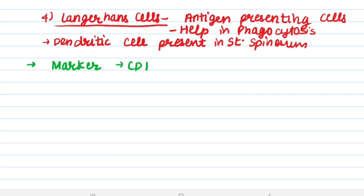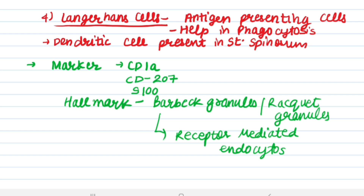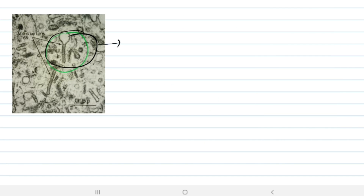Langerhans cells contain markers like CD1A, CD207, and S100. The hallmark of Langerhans cells is Birbeck granules, also called racket-shaped granules, which help in receptor-mediated endocytosis.